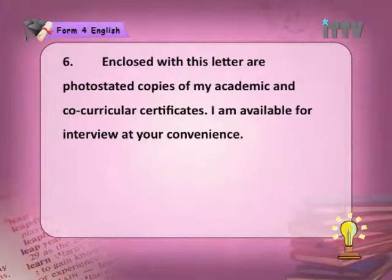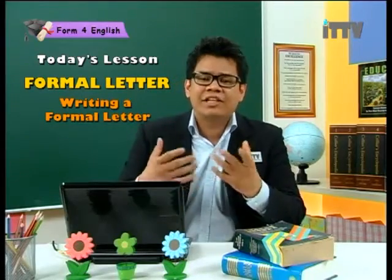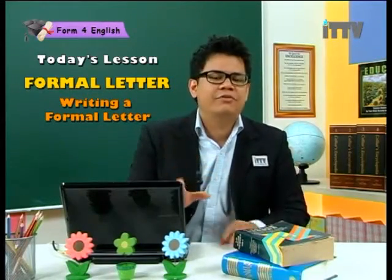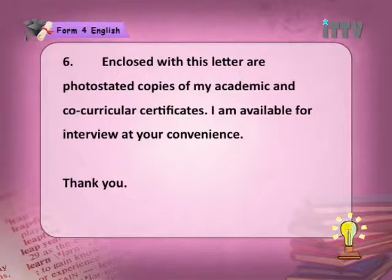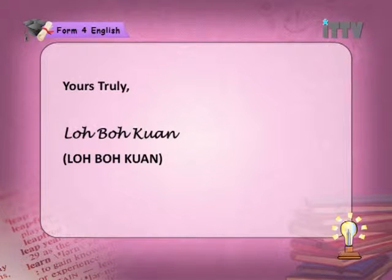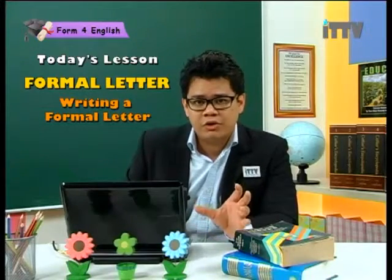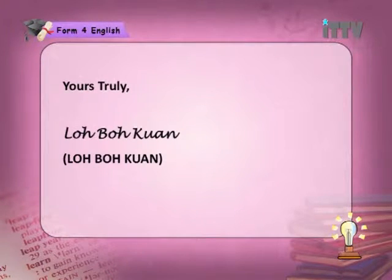In paragraph six, close the letter: 'Enclosed with this letter are photostatic copies of my academic and co-curricular certificates. I am available for interview at your convenience.' He has included certificates supporting everything he has mentioned, and he signals he is ready for an interview. End with 'Thank you,' then 'Yours truly,' sign your name, and print your name clearly in capital letters underneath — this is important in a formal letter.